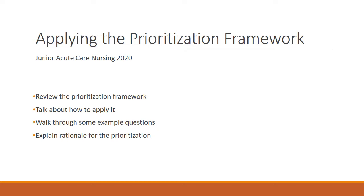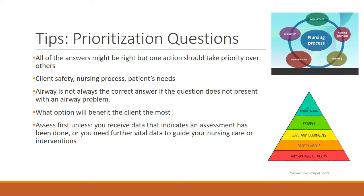When looking at prioritization questions, the first thing you might notice is that all the answers seem correct. All of them might be correct, but there will be one priority that takes precedence over the others. The goal is to identify why that priority is the most important. The three main components we're looking at are: does the intervention maintain client safety, does it follow the nursing process, and does it address the patient's needs.